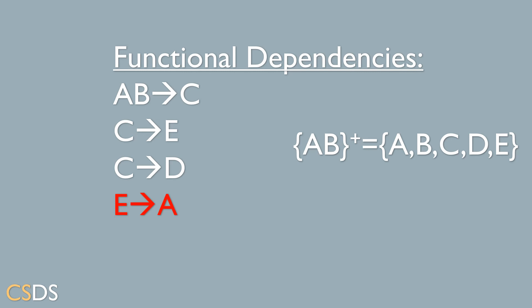Now we move on to the next attribute, which is D. There are no functional dependencies that go from D, so we move on to the attribute E. We can see that there is a functional dependency E goes to A. We have already determined A because the closure is AB, so there is no use in adding A to the closure because it is already there. We have now achieved our final closure of AB.